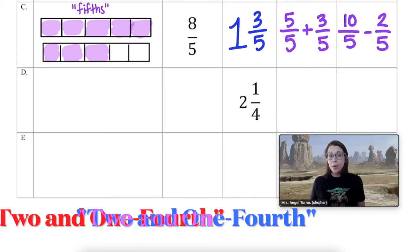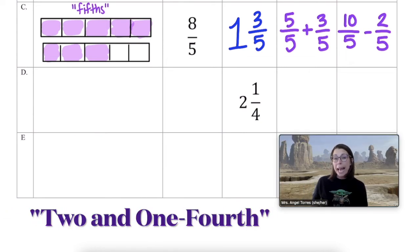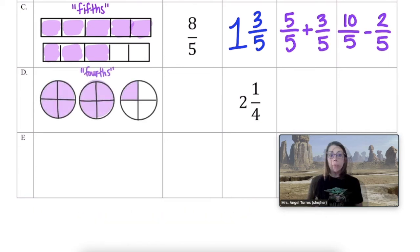Moving on to diagram D, two and one fourth. So for this diagram, I need to draw two holes and one fourth left over. All right. Now we can go in and create our improper fraction. How many fourths do you see? I count nine fourths shaded in. So my improper fraction is nine fourths.